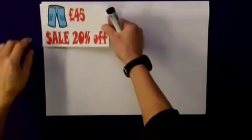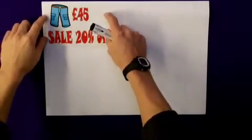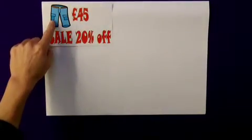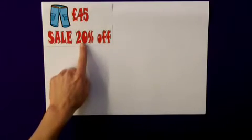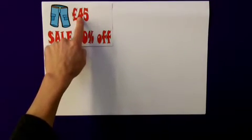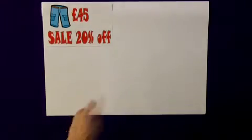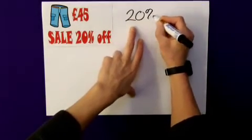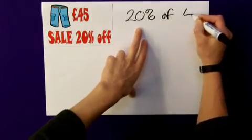What about something a little trickier, then? What if we were down the sales, going to buy a pair of jeans for £45, but the sale says 20% off this price? How do we go about solving that problem? So our task is to find 20% of £45.